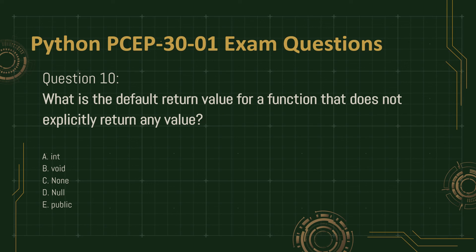Question 10. What is the default return value for a function that does not explicitly return any value? A. Int. B. Void. C. None. D. Null. E. Public.